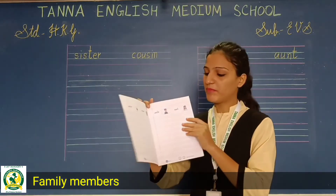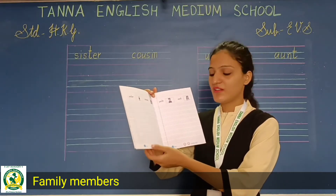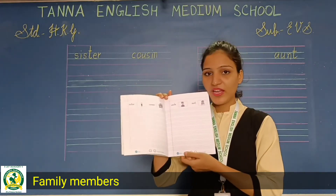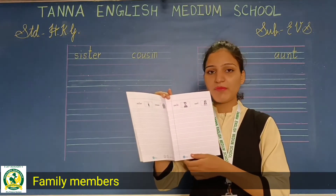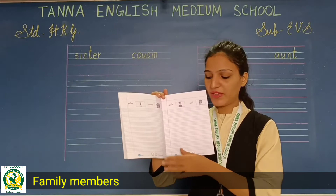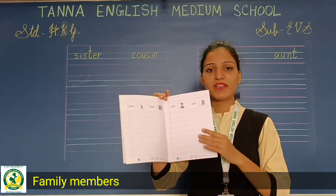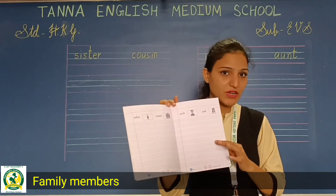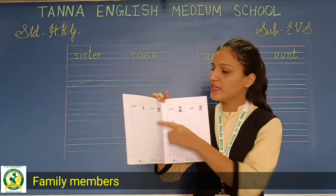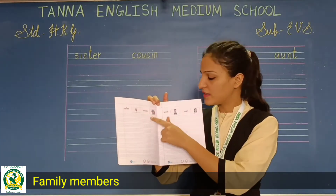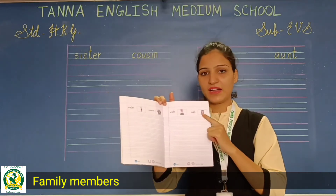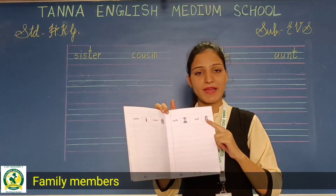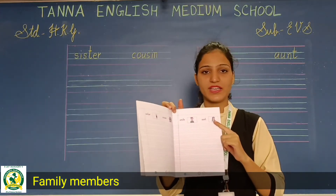Open page number 12. Today we will do family member's names — page number 12 and page number 13. We will cover sister, cousin, uncle, and aunt. Yeh hum spelling to learn karengi aaj.